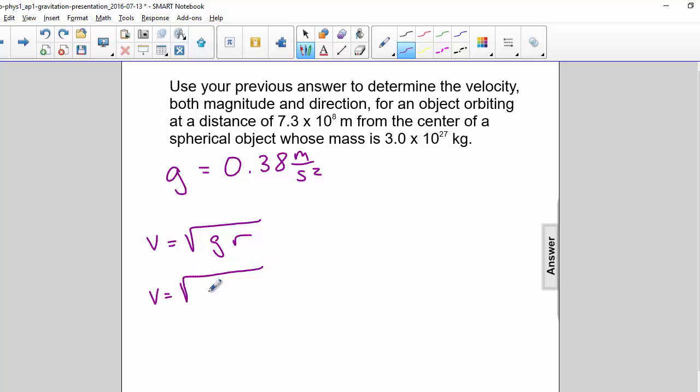So g is 0.38, and r is 7.3 times 10 to the 8th.